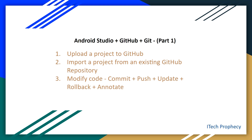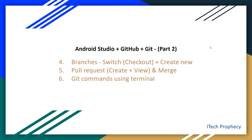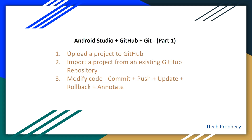Hello guys, I'm back with a new video on how to use Git and GitHub in Android Studio. I have divided this video in two parts. In the first part we will be uploading an Android Studio project to GitHub, then import a project from an existing GitHub repository, then modify some code and see how we can commit, push, update, rollback and annotate directly from Android Studio. In the second part we will switch and create new branches, then do pull requests and merge, and finally use git commands using terminal, all directly from Android Studio.